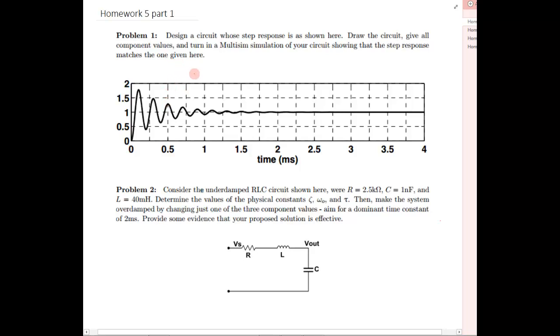From this step response we can find two valuable pieces of information. One is tau, because 5 tau equals how long it takes for this dampened oscillation to dampen out. So we're going to say it dampens out at two milliseconds, which means that tau is going to equal 4 times 10 to the minus fourth seconds.